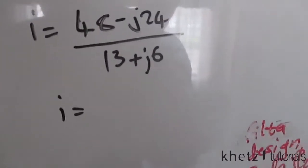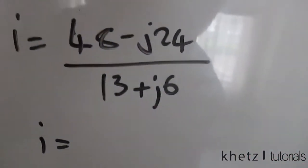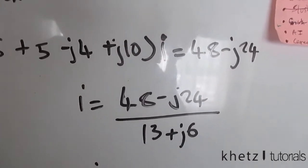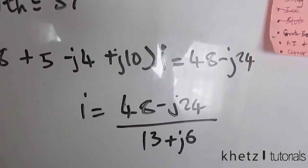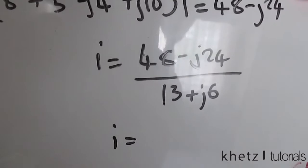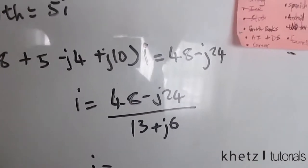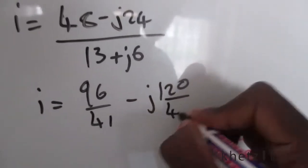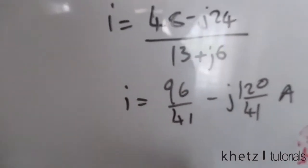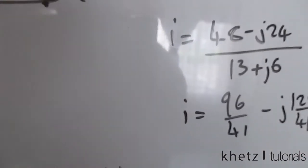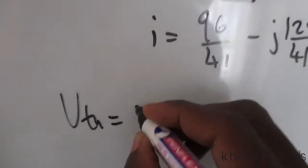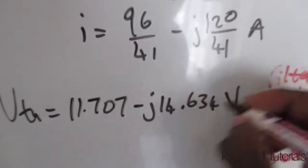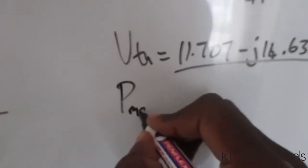So i = (48 - j24) / (13 + j6), and the answer is 96/41 - j120/41 amperes. We then multiply that by 5 to find Vth, giving Vth = 11.707 - j14.634 volts.